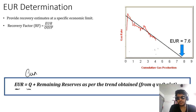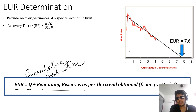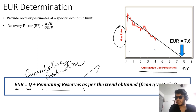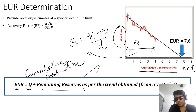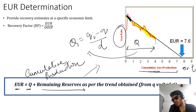EUR is the summation of cumulative production plus the remaining reserves as per the trend. Looking at this graph of rate versus cumulative production or time: till a certain point it has already been produced — that cumulative Q expression from the previous slide. You also know the trend and you assume it continues into the future, from which you get the forecast. Whatever you get from the forecast is your remaining reserves.